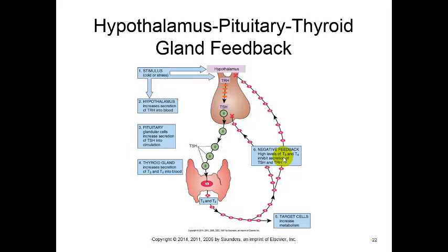The anterior pituitary will cause TSH - thyroid stimulating hormone - to be released. The thyroid stimulating hormone travels down to the thyroid and stimulates it to secrete T3 and T4, two hormones that will increase the target cell's metabolism. It causes you to warm up, feel a little jittery, and increases metabolism.